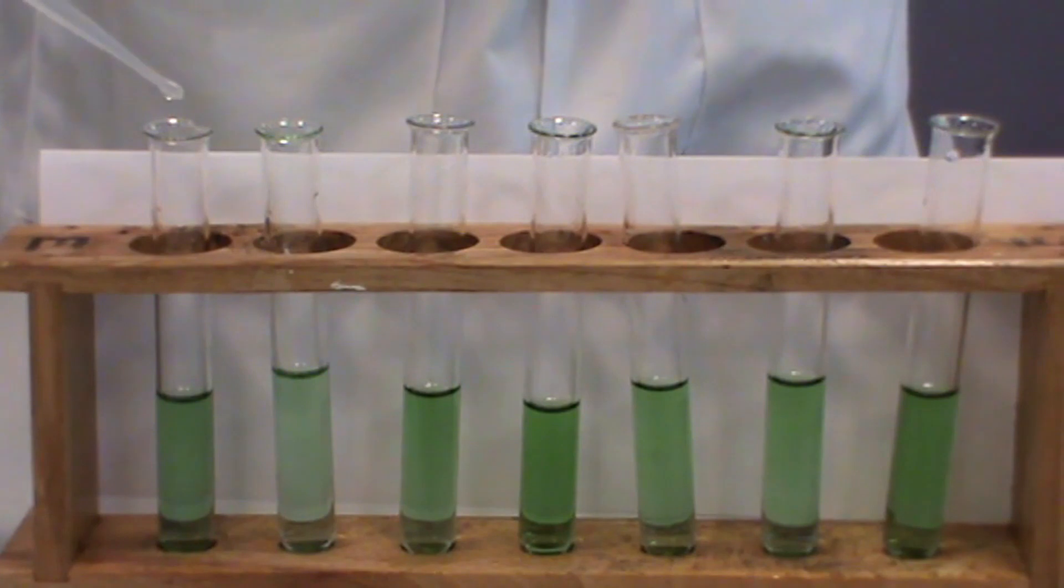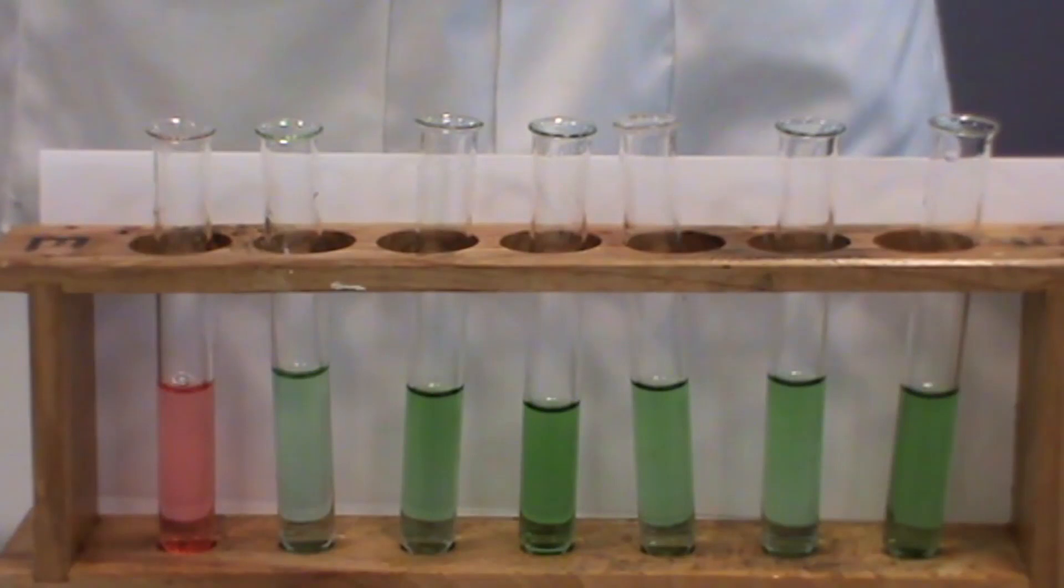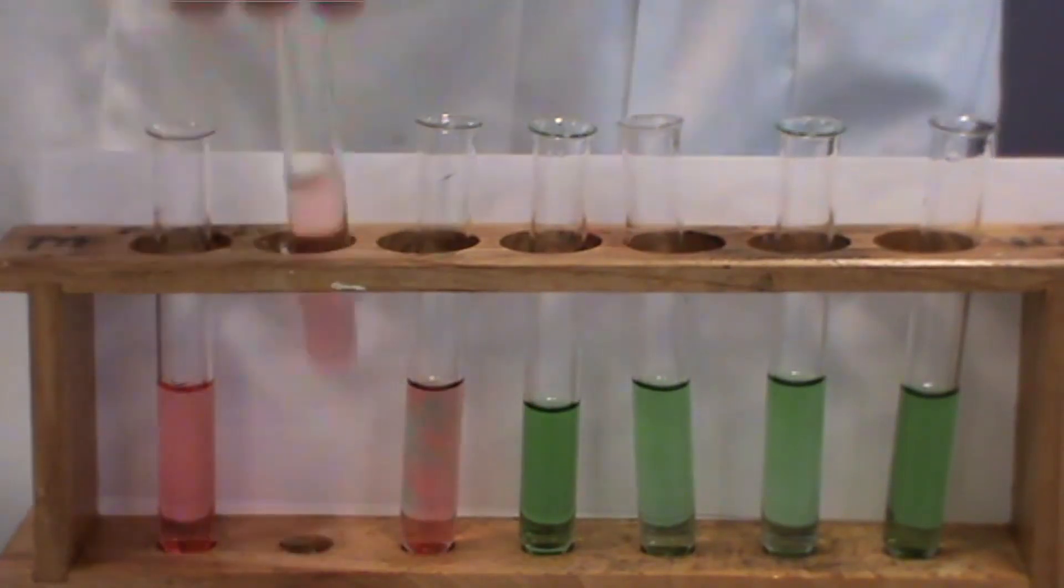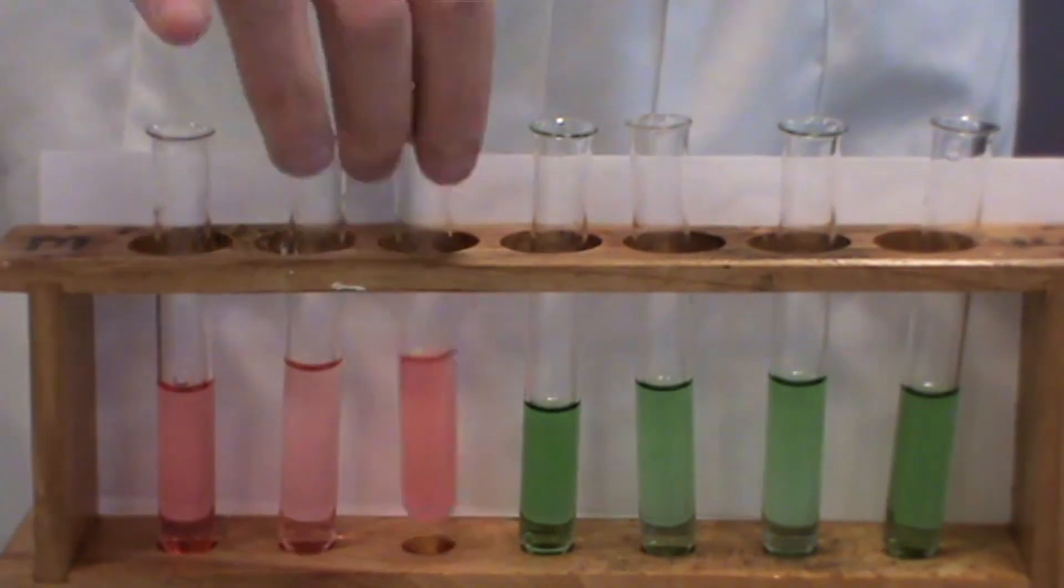Now we need to prepare our initial acidic and alkaline solutions. Several drops of hydrochloric acid are added to three of the test tubes. These are then shaken up to produce a red colour, indicating the solutions are very acidic.